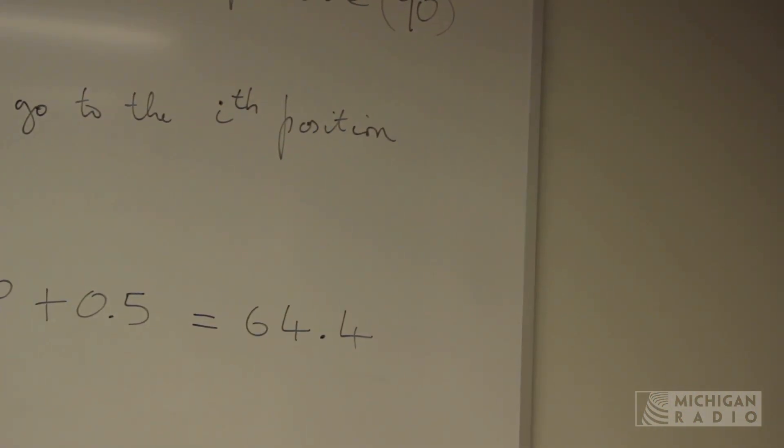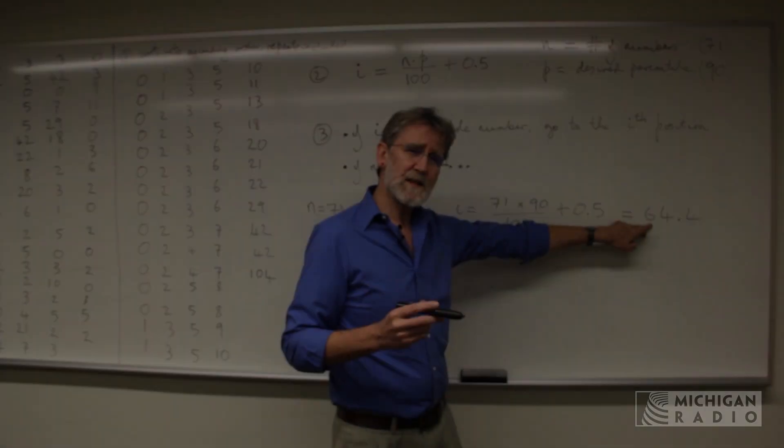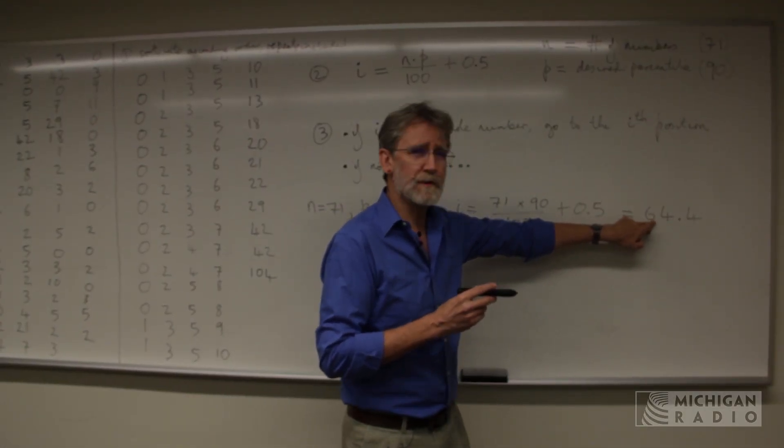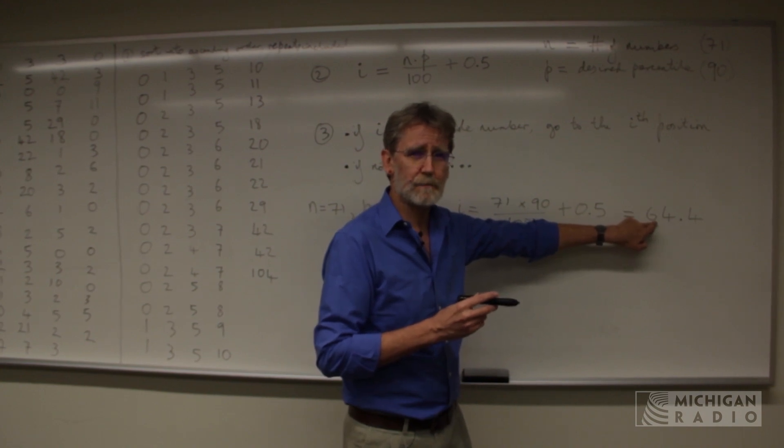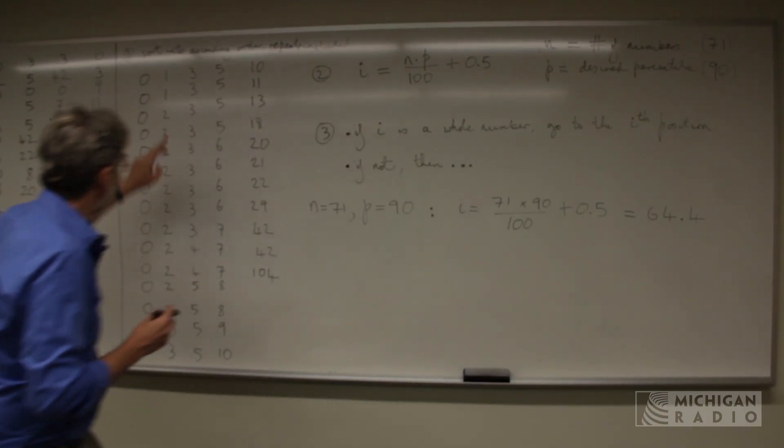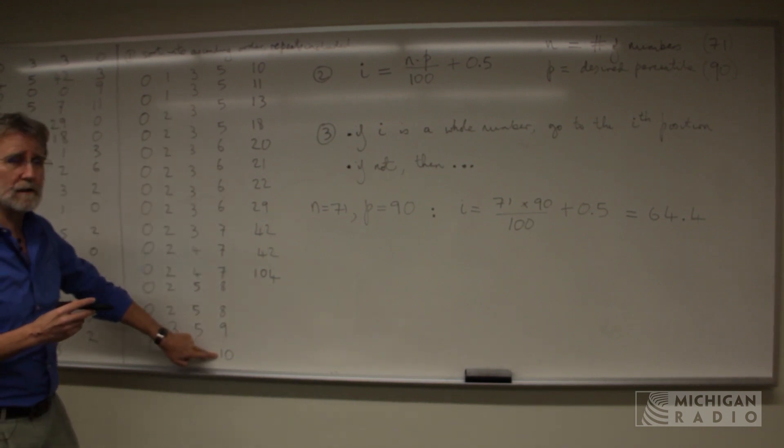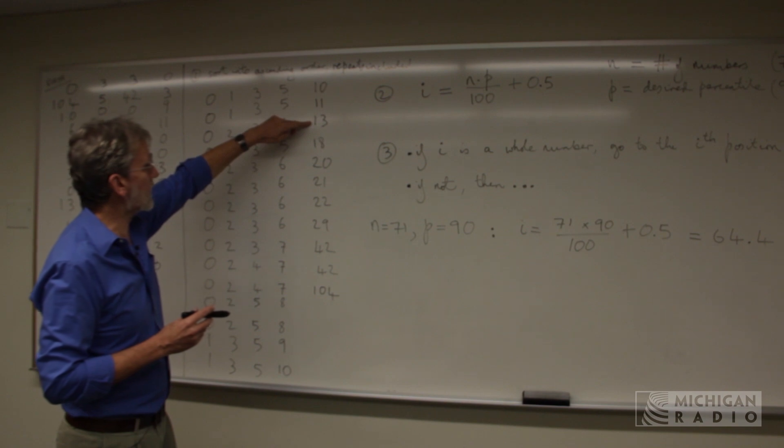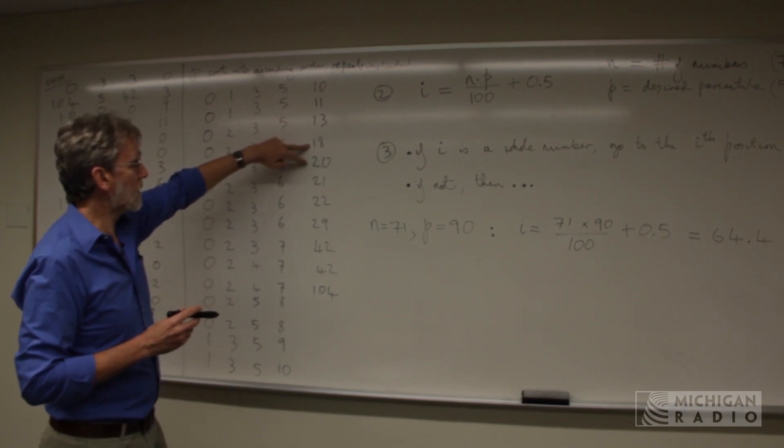So here we are, 64.4. What that tells you immediately is it's somewhere in between the 64th position and the 65th position. So let's locate those. Remember I've got 60 numbers up to here. So this is 61, 62, 63, 64, 65.